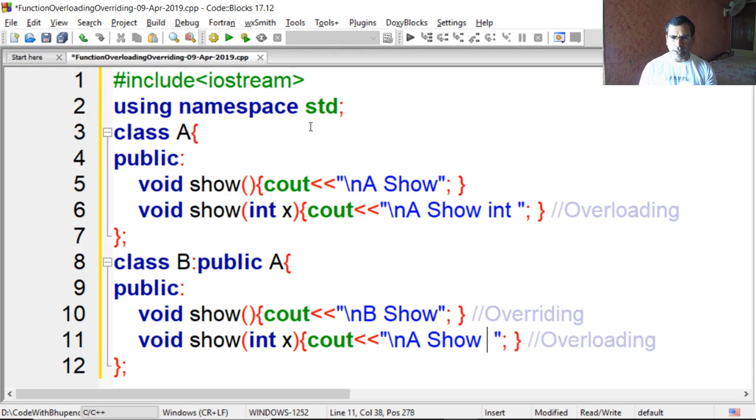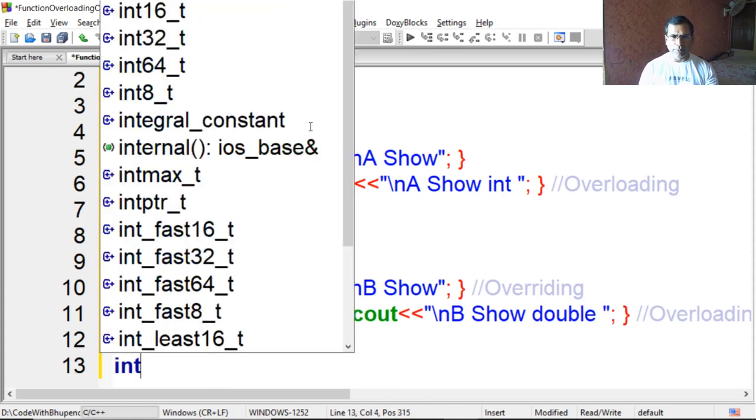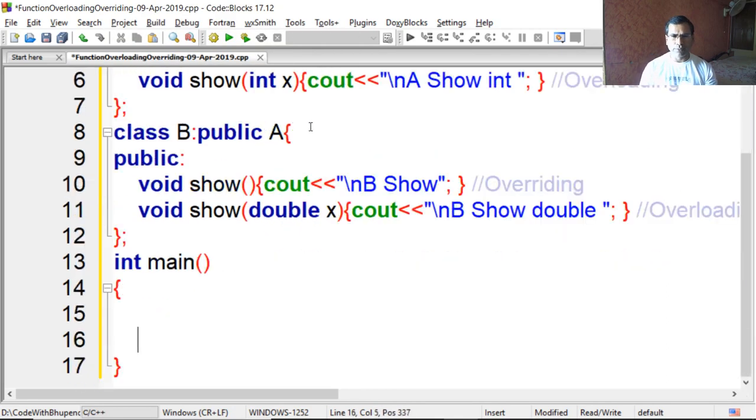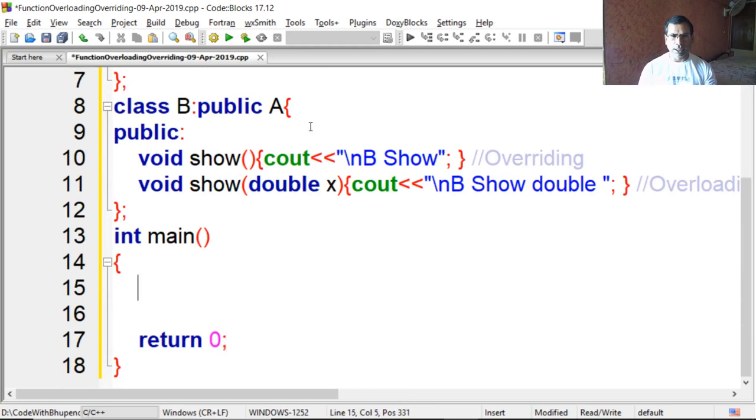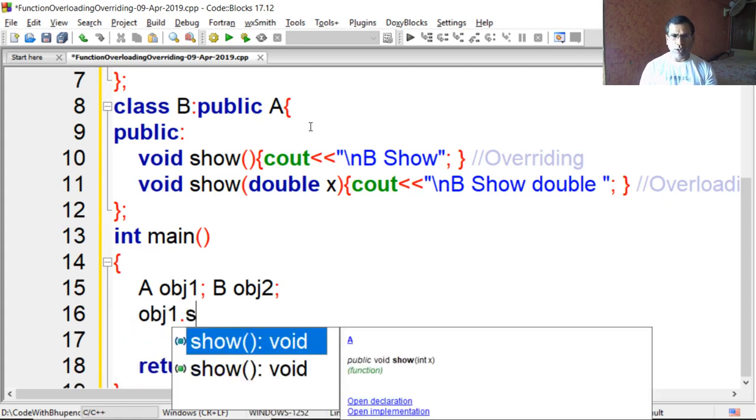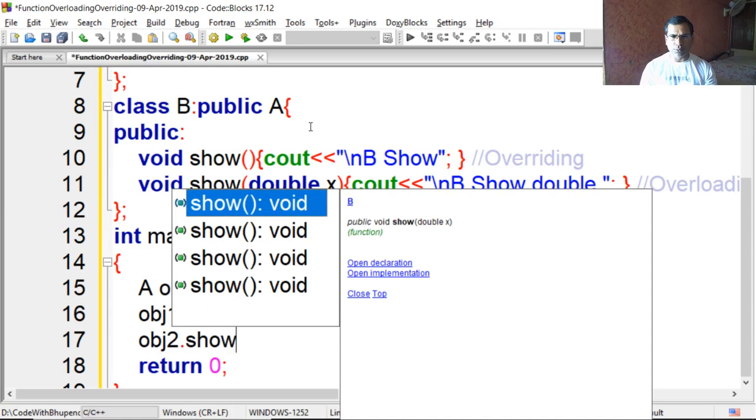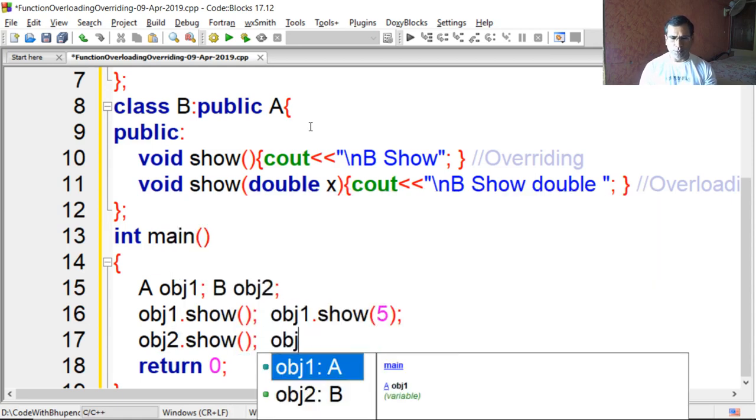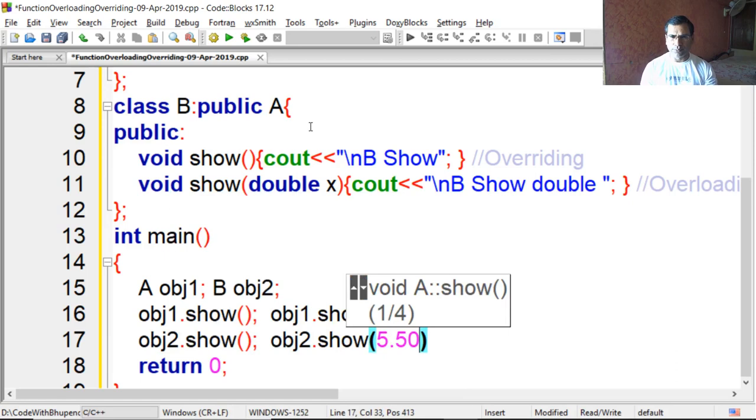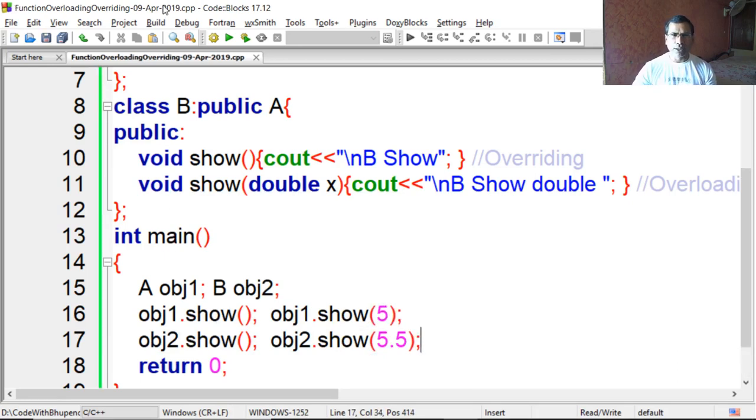Here we are using double B and here I am changing it to double X. Main program, and we will create two objects: object one, object two, and call show function. Similarly object two dot show, object two dot show 5.5. Again compile and run it.